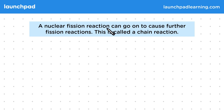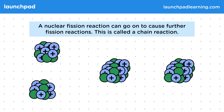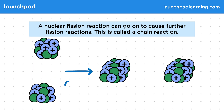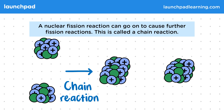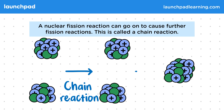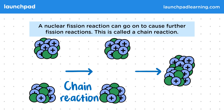A nuclear fission reaction can go on to cause further fission reactions, and this is called a chain reaction. Within a chain reaction, the first fission reaction goes on to cause further fissions.